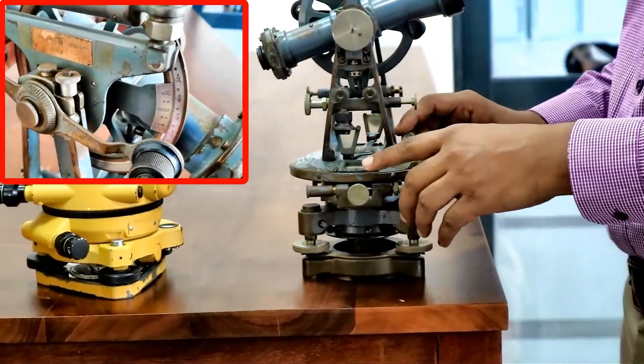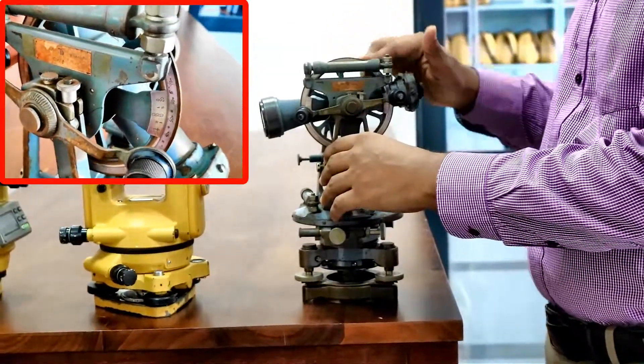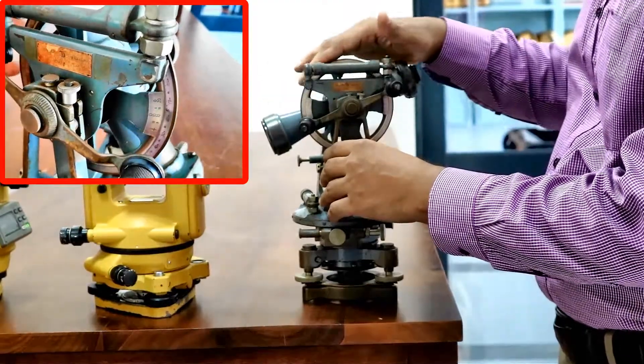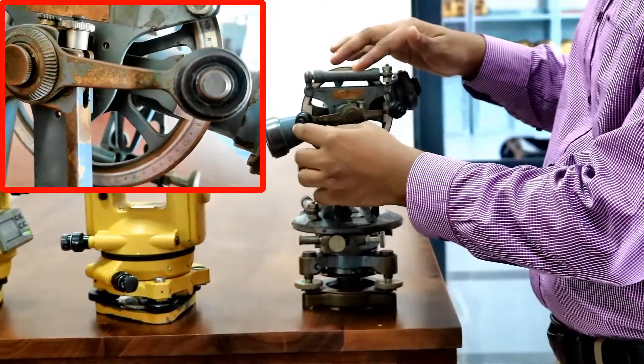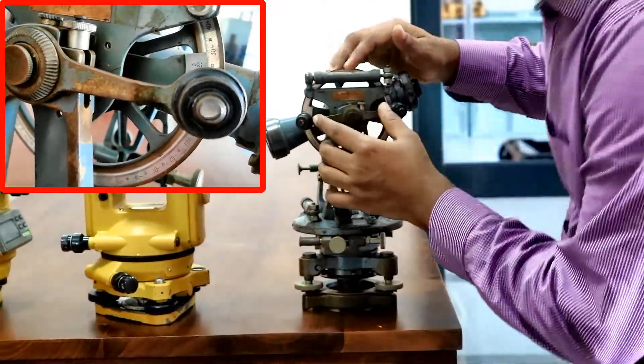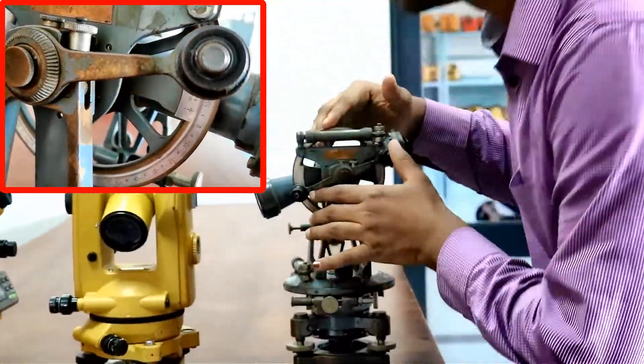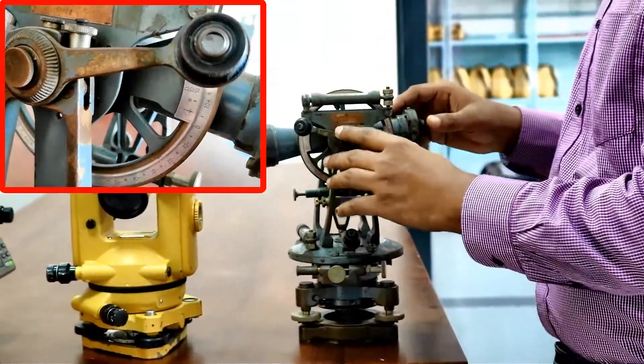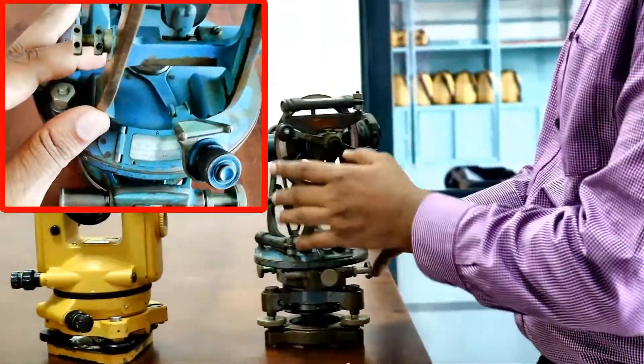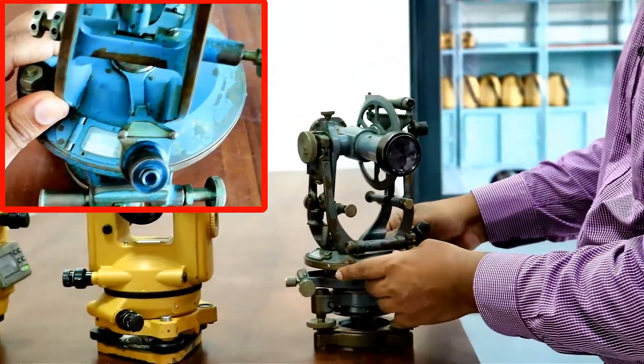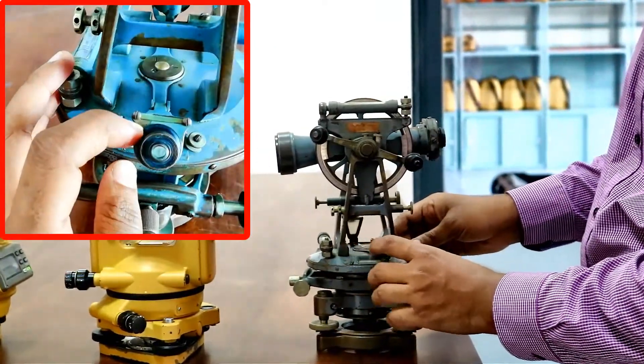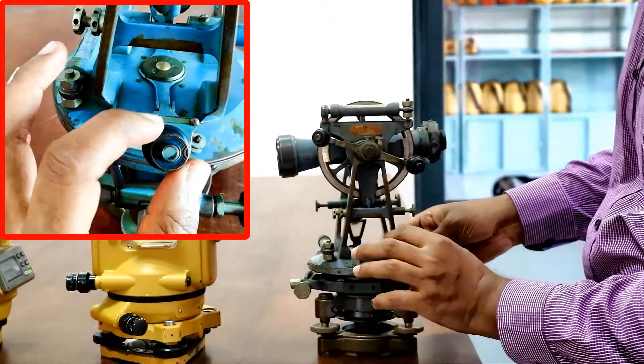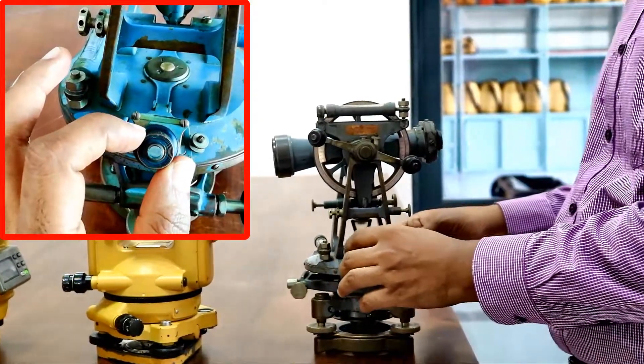If you carefully observe, this vertical circle consists of vernier readings where you can measure the angles easily. For that, magnifiers are attached to read the vernier readings. And not only for the vertical circle but also for the horizontal circle. Verniers are there as well as the magnifiers are there to see the vernier readings.